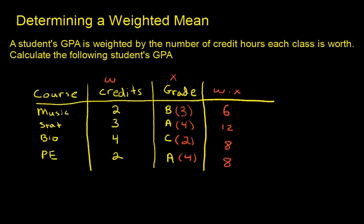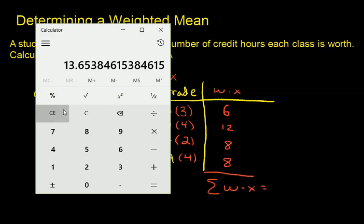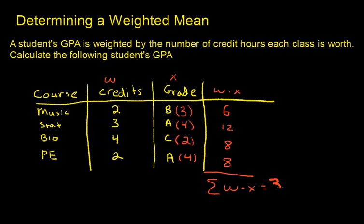Now this is basically starting to sum up all of the grades, so we need to sum up all of these points. Let's go ahead and do that. We can pull out a calculator, so I have six plus 12 plus eight plus eight, so 34. So there's 34 points total that this student earned this semester.